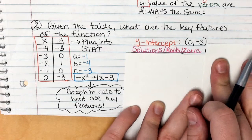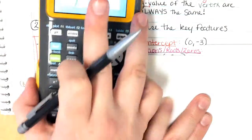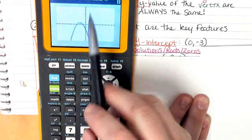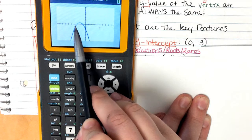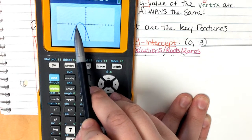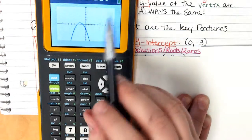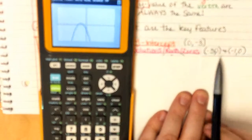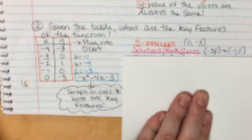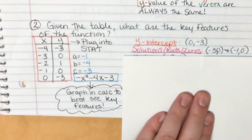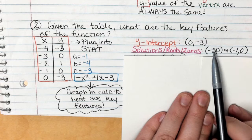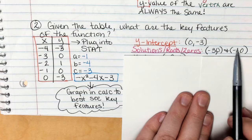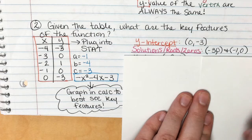The zeros, roots, and solutions are where the graph crosses the x-axis: at x = −3 and x = −1. Written as coordinate points, those are (−3, 0) and (−1, 0). The order you write them does not matter.